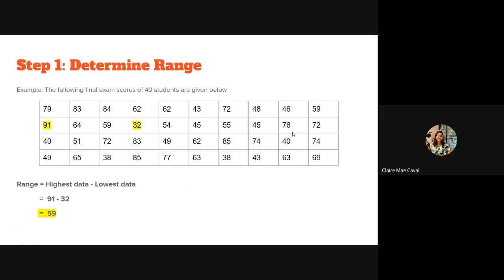This set of data is not yet arranged. Once arranged from ascending or descending order, they are already called an array. It is helpful to put raw data in an array because it is easy to identify the extreme values or where scores most cluster. So it will be easier for the researcher to organize the data.